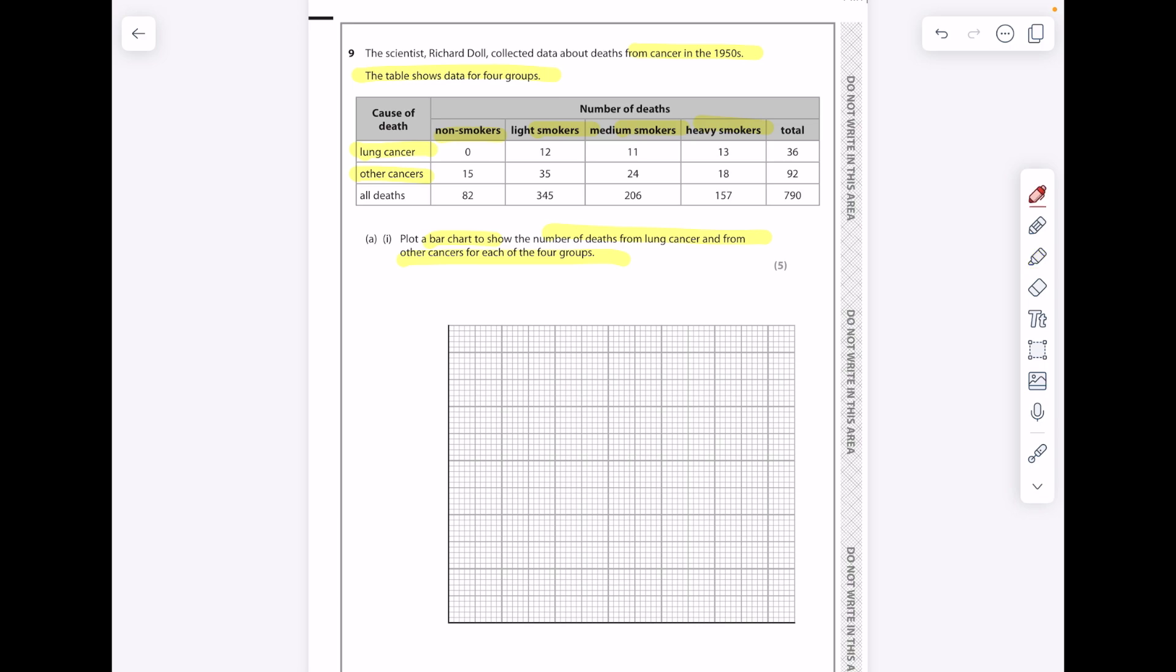In terms of what goes on your y-axis and your x-axis, your y-axis is what you're measuring. It's always the dependent variable. We need to go from zero all the way up to 35, so pick a sensible scale here. I'm going to go up in tens. Remember we need to occupy as much of the graph paper as possible.